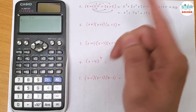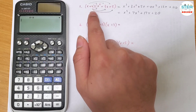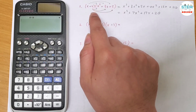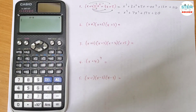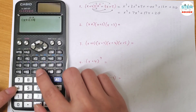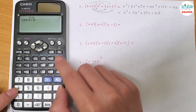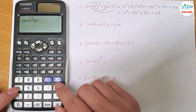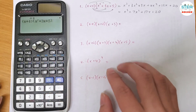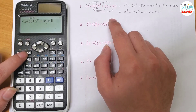Now let me go over this. First, let me turn on the calculator. If you want to do this, you need to type exactly how it looks on the paper. So I have x plus 4 times — you hit the multiplication button — times x squared plus 3x plus 5.